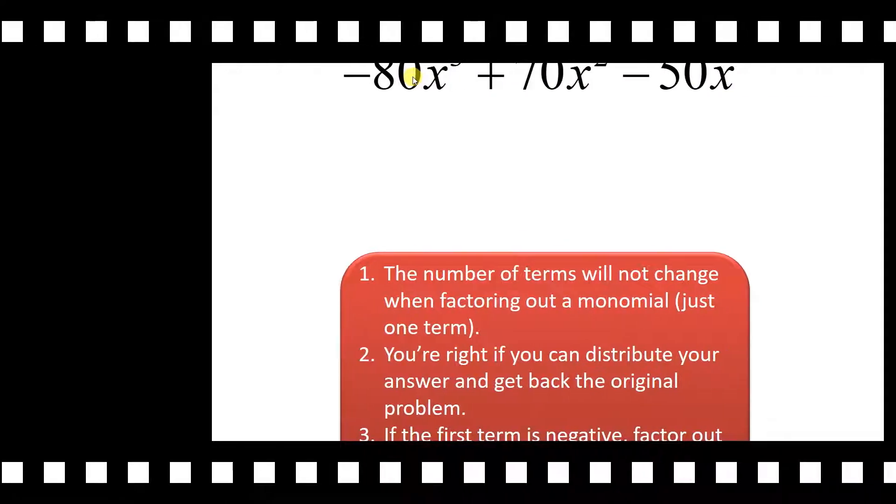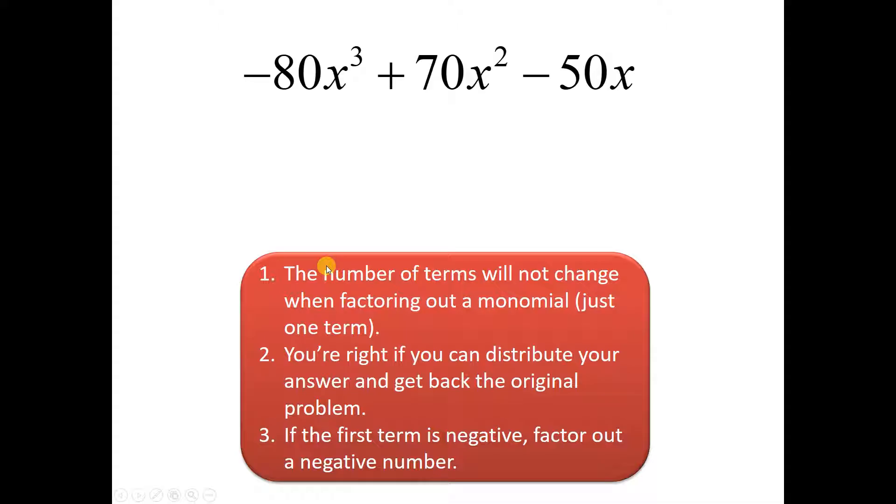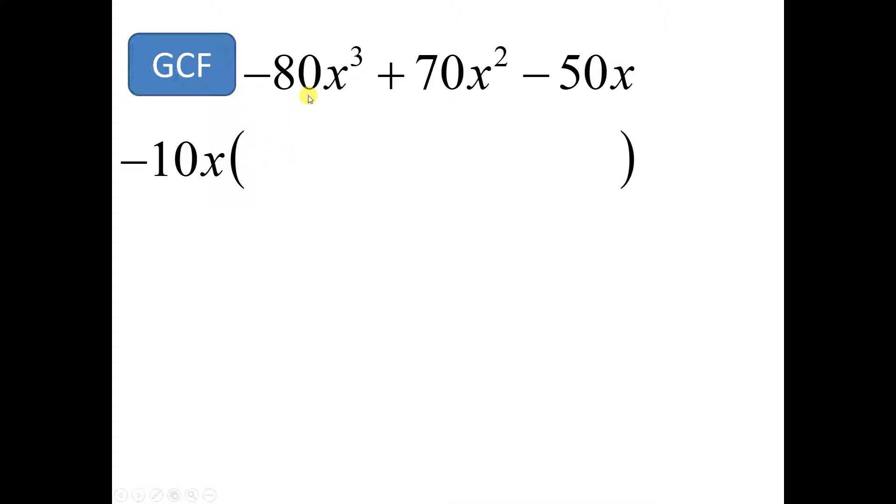So our first term is negative and it's going to make our life a lot easier when we start doing additional math after this factoring if we go ahead and factor out a negative 1 like this. So our greatest common factor is going to be negative 10x. Negative 10 goes into all of these numbers and x goes into all of those. So that's what I'm going to take out. When I divide 80x³ by 10x, this is what I get. I get 8x². So that's what's going to go right here. 8x².